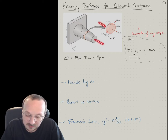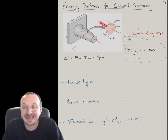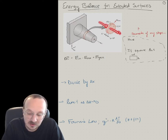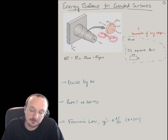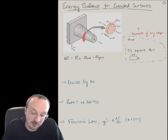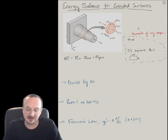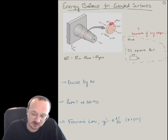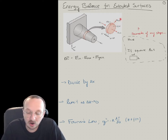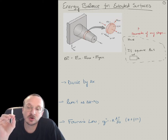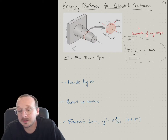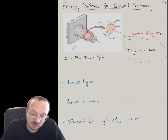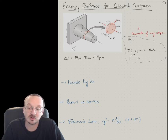We have flux going in at location x and coming out at x plus delta x. There's a cross-sectional area, subscript C, and then a surface area on the outside of the fin. The idea is that this fin is cooling — there's some convection that allows this fin to extract or absorb heat. So there's energy going out of the fin along its surface area, and that's what makes the energy balance for a fin unique: the control volume has a convection loss.